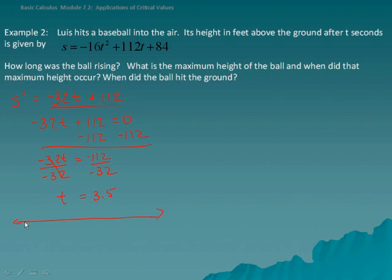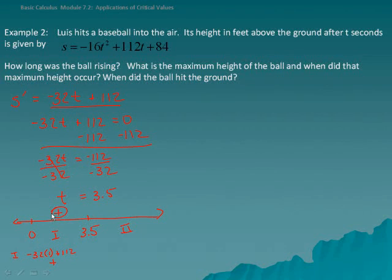We set up a number line starting at 0 — when Luis hits the ball. The critical value 3.5 gives us two regions. For region 1, plugging t equals 1 into the derivative gives negative 32 times 1 plus 112, which is a positive value, so region 1 has a positive derivative. For region 2, plugging in t equals 4 gives negative 32 times 4 plus 112, which equals negative 128 plus 112, a negative value. So region 2 has a negative derivative.